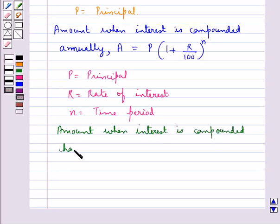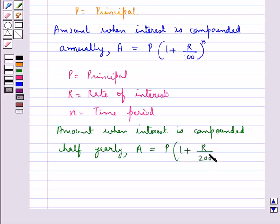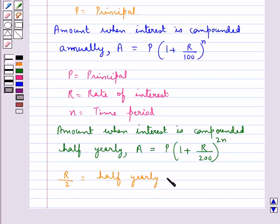The amount when interest is compounded half yearly is given by A equal to P into 1 plus R upon 200, whole to the power 2n, where R upon 2 is the half yearly rate and 2n is the number of half years.